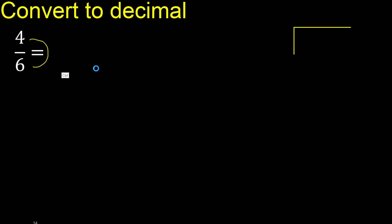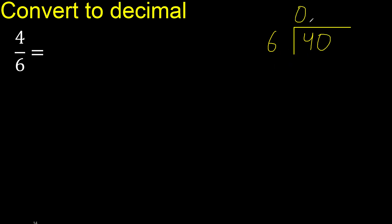4 divided by 6. Since 4 is less than 6, we complete with 0. Here, 0 point — 40 is not less, so we proceed with 40 divided by 6.